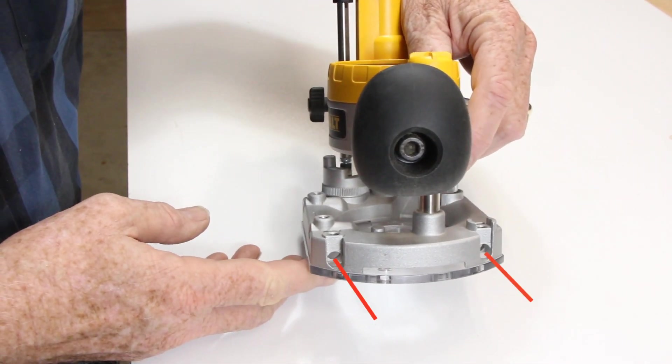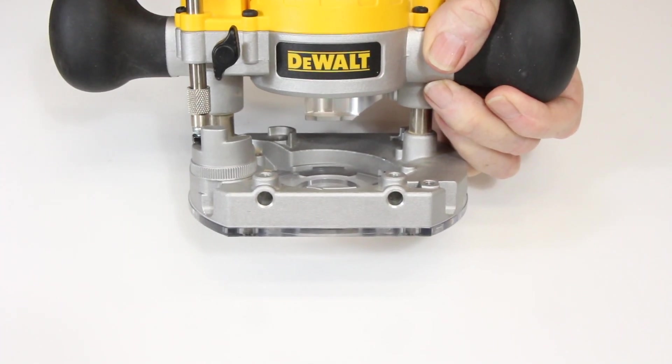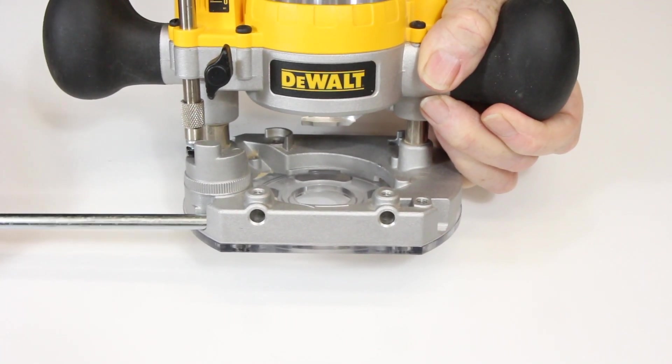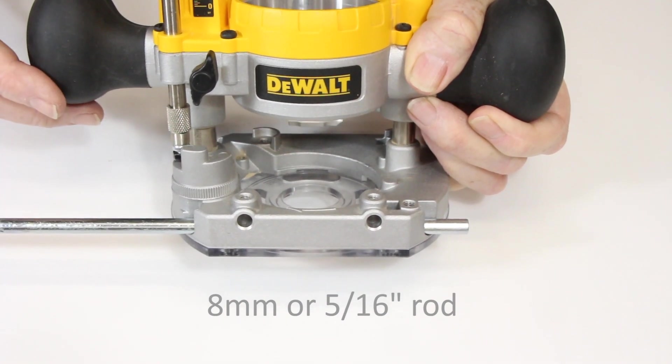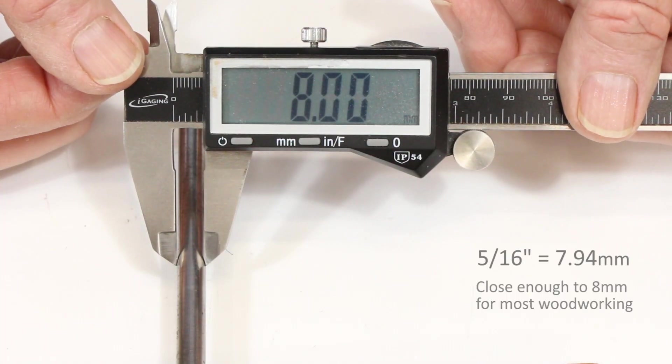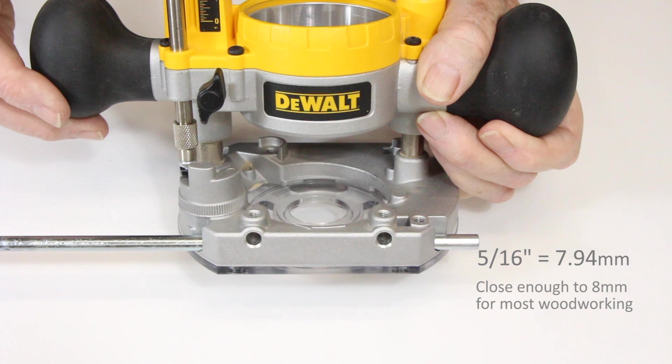The router I wanted to use has a plunge base with holes for 8mm or 5/16 inch rods. This is a great feature that many routers share, and it makes possible jigs that are strong, easily adjustable, and importantly, that don't sacrifice any of the plunge depth.